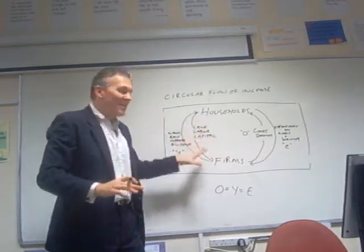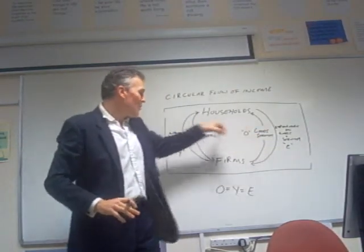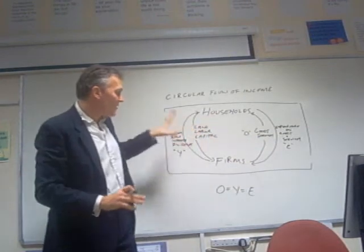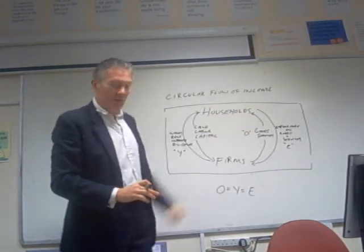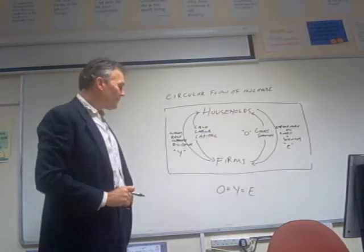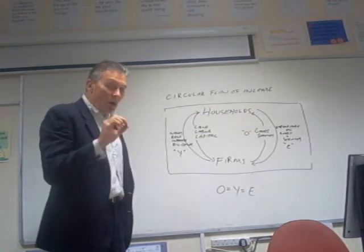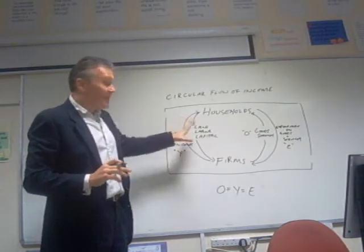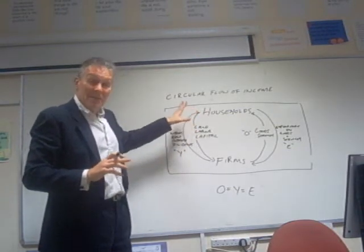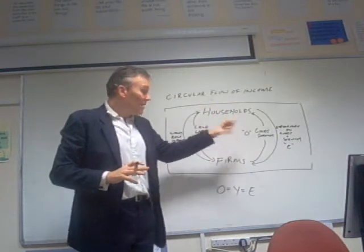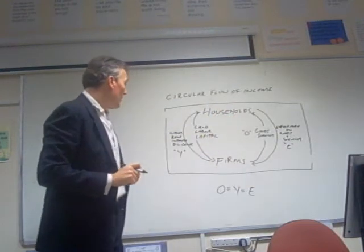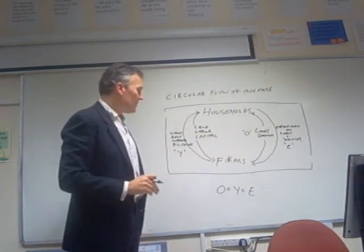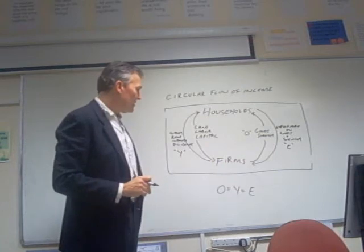So we can see that O equals Y equals E. It doesn't matter whether it's national income, national expenditure, or national output — they're all part of the same thing, just different stages going through. Now, we add a little bit extra to this because this model is unrealistic, not including many other vital agents in the economic process, namely governments and foreign institutions and foreign nations.